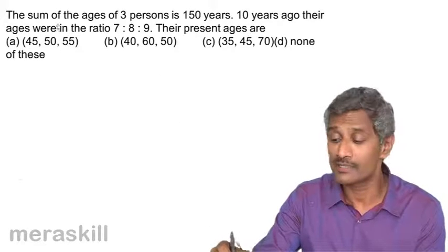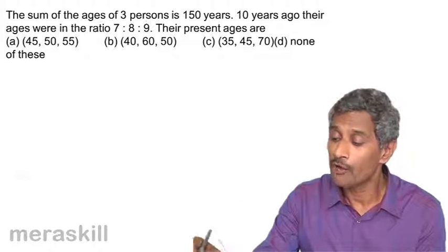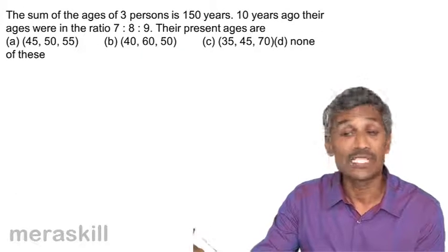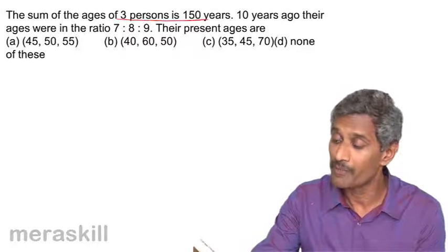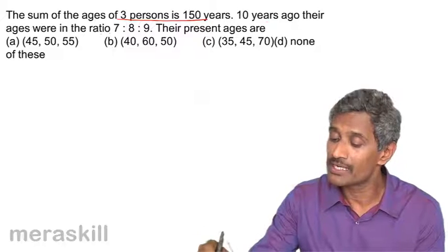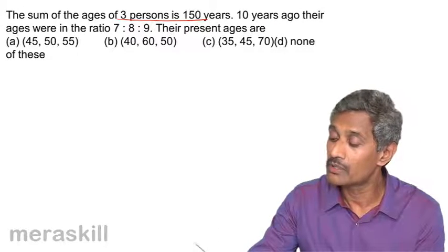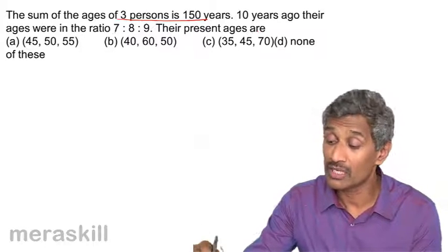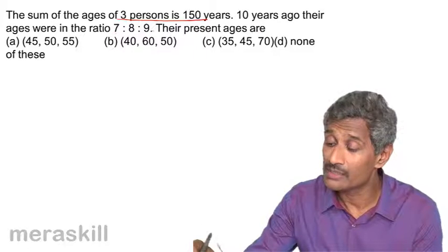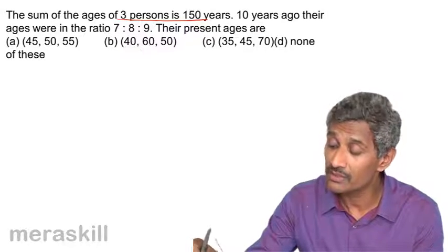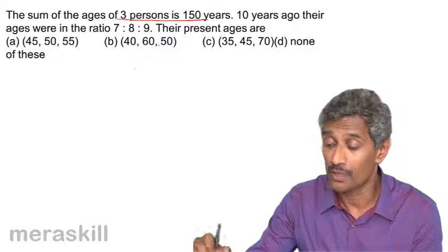So here we have a question. The sum of ages of three persons is 150 years currently. 10 years ago, the ages were in the ratio 7 is to 8 is to 9. What are the present ages right now? The ratio 10 years ago was given, and we need to find what are the ages right now.